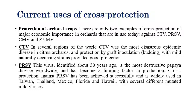Current uses of cross protection include protection against orchard crops affected by viruses such as citrus tristeza virus, papaya ring spot virus, cucumber mosaic virus, and zucchini yellow mosaic virus. These are examples where the cross protection technique is commercially employed.